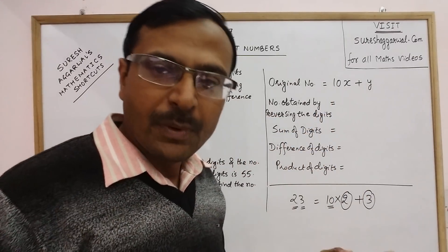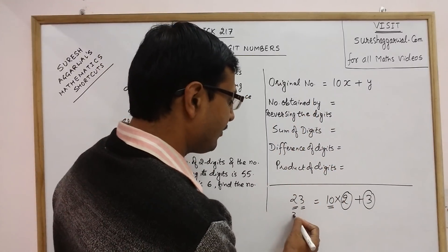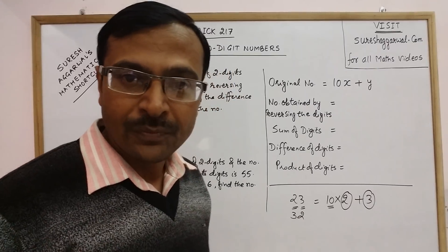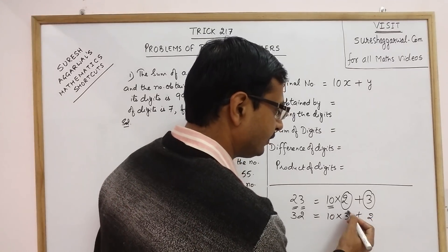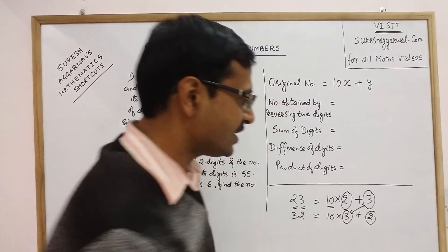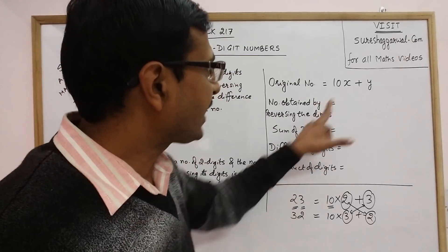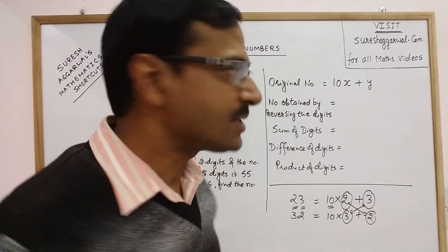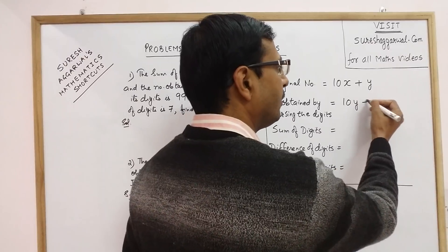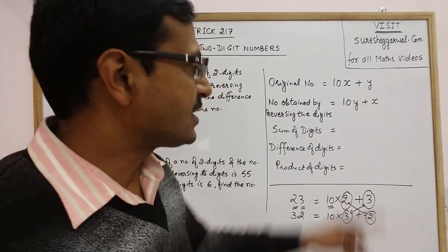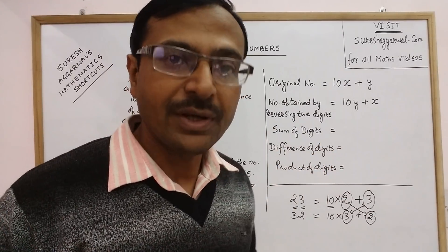Many problems are based on reversing the order of the digits. For example, 23 reversed becomes 32, which in expanded notation is 10 into 3 plus 2. Here x and y interchange their positions, so when we reverse the number, the number obtained is 10y plus x. So the original number is 10x plus y and the reversed number is 10y plus x.